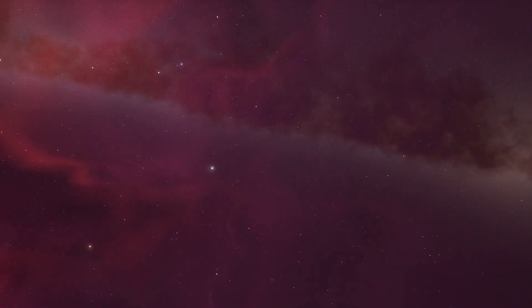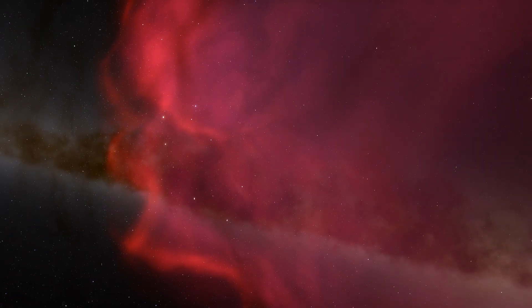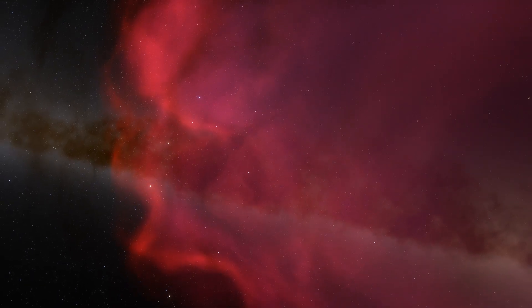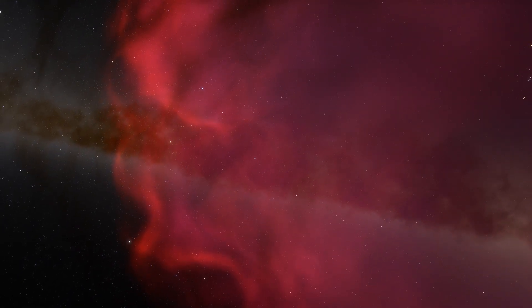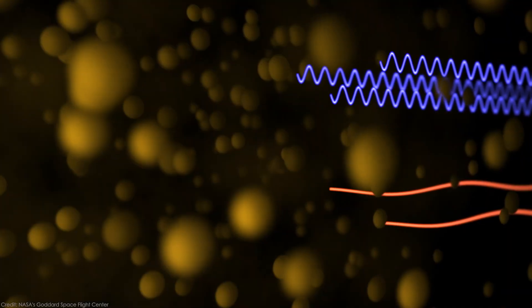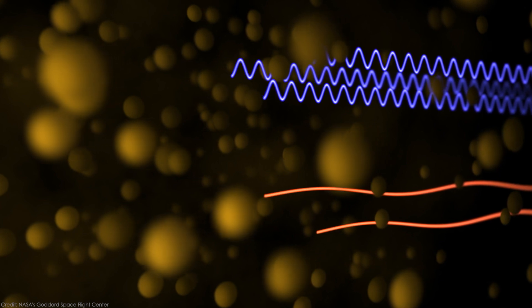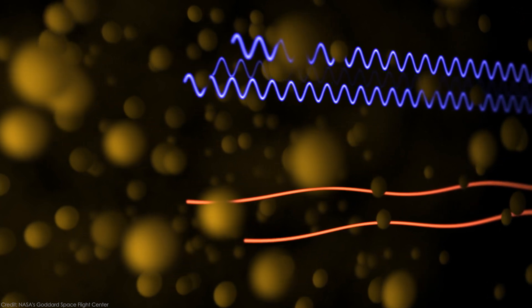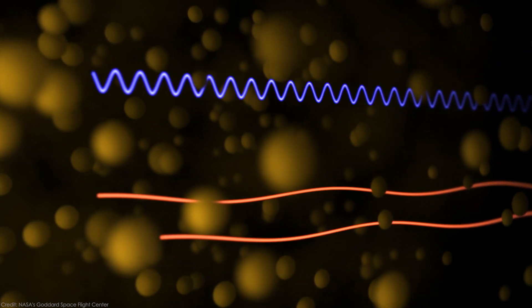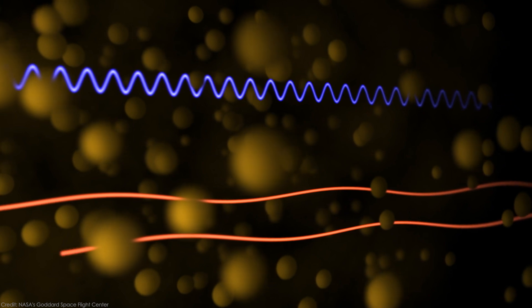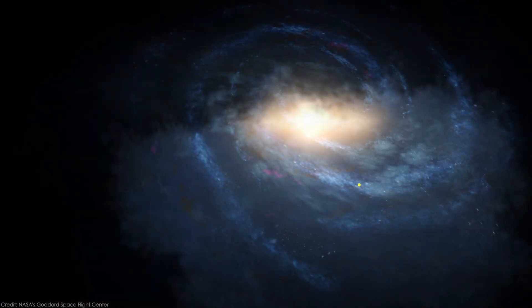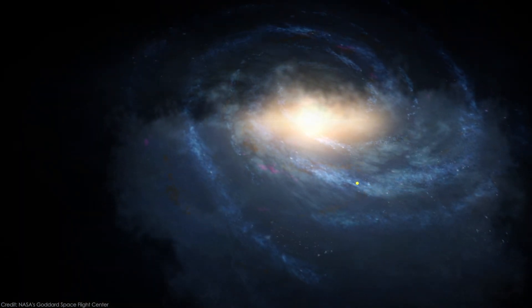The 21 cm line from neutral hydrogen is one of the favorites in astrophysics. First, it is very precise, and nothing else in the universe produces the same frequency. So if you detect 21 cm radio waves in space, you know it's neutral hydrogen. Secondly, this specific wavelength has the convenient property of passing rather freely through clouds of gas and dust. So point a radio telescope in a certain direction, and the more intense the 21 cm signal you find, the more hydrogen you're observing.